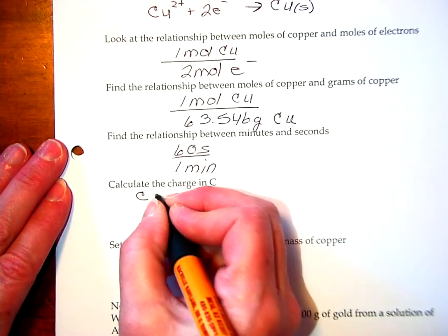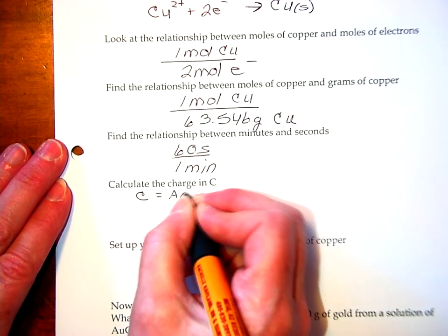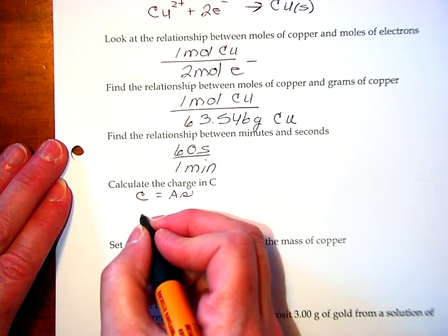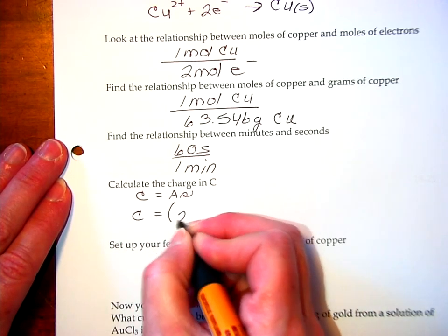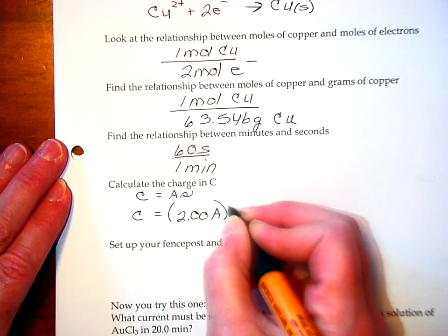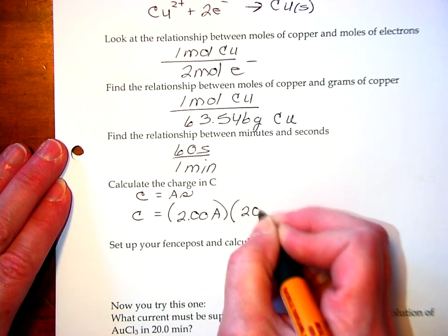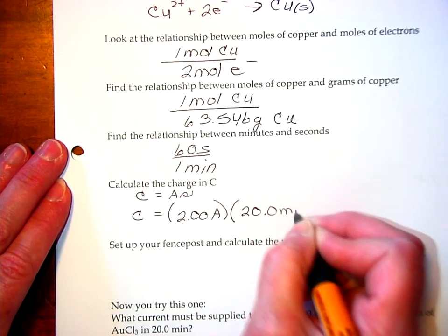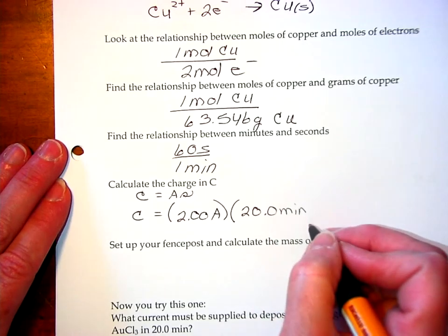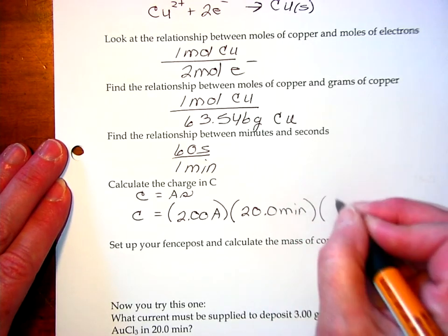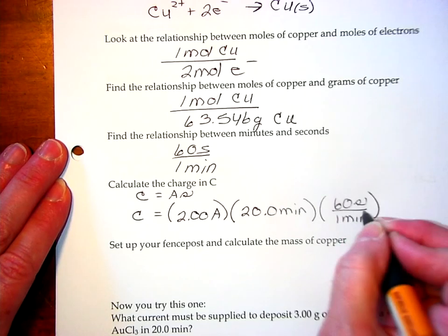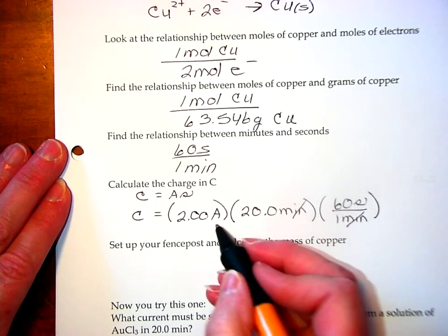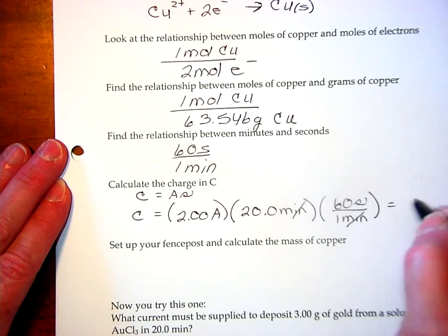We know that the charge in coulombs is equal to the amperage times the time in seconds. So, my charge is equal to my current 2.00 amps running for 20 minutes and I need seconds to get the coulomb charge. So, I'll multiply times 60 seconds per 1 minute. Now, my minutes cancel and I'm left with ampere seconds and I get 2400 coulombs of charge.